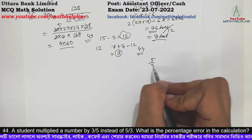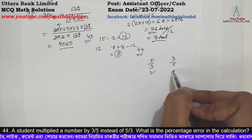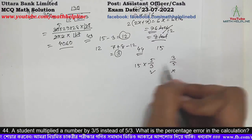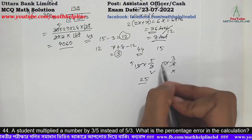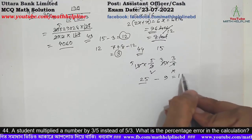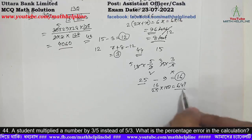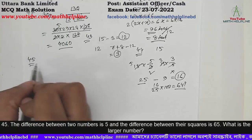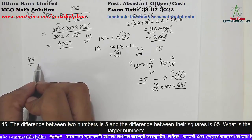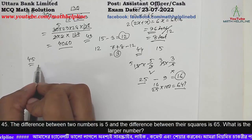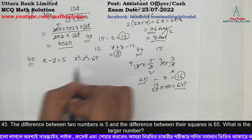For problem 44: The student multiplied by 3/5 instead of 5/3. So the correct answer should be 25 and the wrong answer is 9. The error is 25 minus 9 equals 16. For the percentage, we compute 16 divided by 25 into 100.